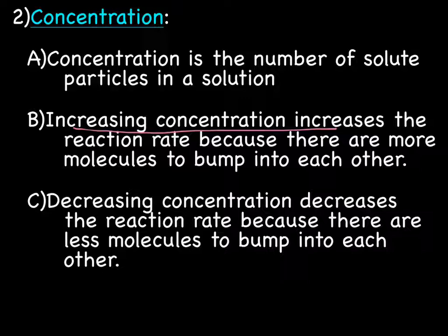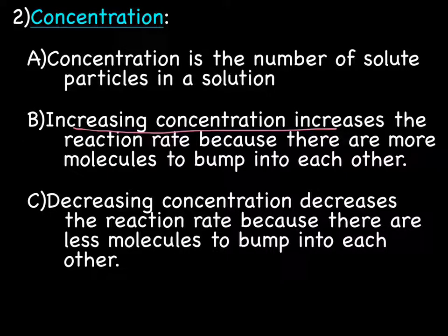Decreasing concentration decreases reaction rate because there are fewer molecules to randomly bump into each other. Remember, the molecules don't have eyes — they're just bouncing around, and if they happen to hit each other with enough force, there's going to be an effective collision. So the more particles there are, the more effective collisions there are likely to be, and the faster the reaction rate. Increasing concentration increases rate of reaction; decreasing concentration means less likelihood of effective collisions, decreasing the rate of reaction.